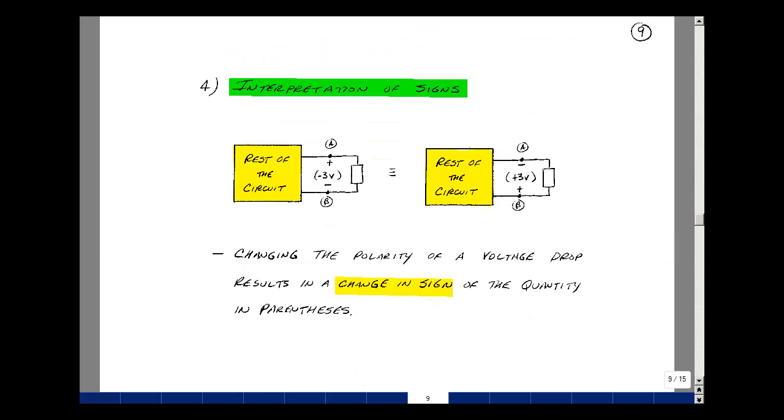Let's take a look at some examples here. I can tell you how to interpret signs. Suppose that I have a two terminal element. Again, I label the voltage from A to B, and I find or measure that its value is minus 3 volts.